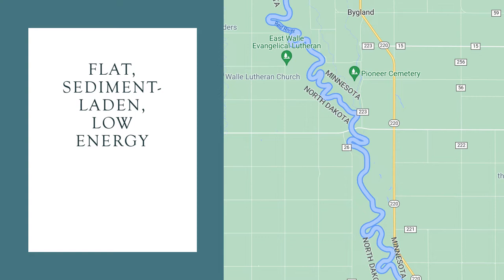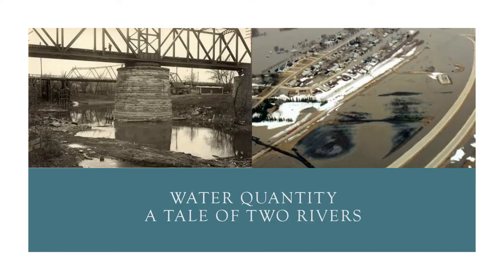While flat, sediment-laden, and low energy might describe my moves on the dance floor, it is also why the Red River is so sinuous. Rather than cutting a defined channel in the landscape, it meanders back and forth depending upon the level of energy in any given meander. These conditions mean that overall the river tends to move only slightly each year, generally less than a third of a meter.